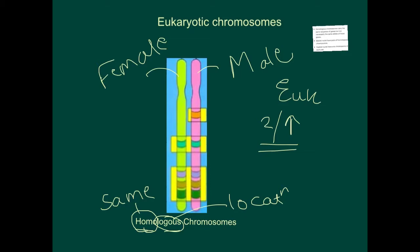Any guesses as to how many homologous chromosomes we have in our cells? I'm sure most of you would have guessed correctly — it is 23 pairs of homologous chromosomes present in our cells as humans.